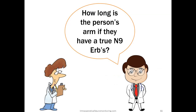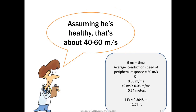Here's a math application: if you have a true N9 ERBs point and know the conduction speed is typically 40 to 60 meters per second, you can estimate arm length. At 9 milliseconds with an average peripheral conduction speed of 60 m/s (0.06 meters per millisecond): 9 ms × 0.06 m/ms = 0.54 meters, which converts to approximately 1.77 feet.